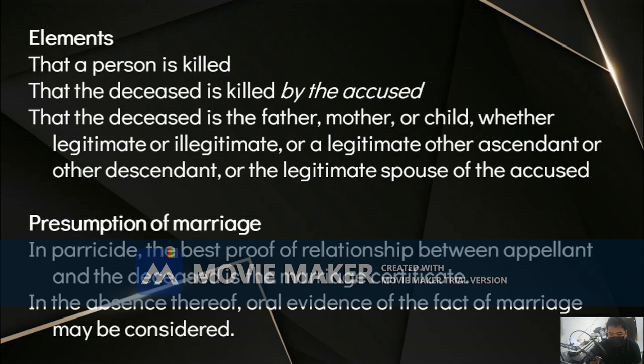For example, if A is a legitimate son of B, but B is an illegitimate son of C, then C is A's illegitimate grandfather. If A kills C, he is not guilty of parricide — the crime is only homicide. The term 'illegitimate' covers all children born out of wedlock — children born to unmarried partners. Even if they later marry, those children remain illegitimate.